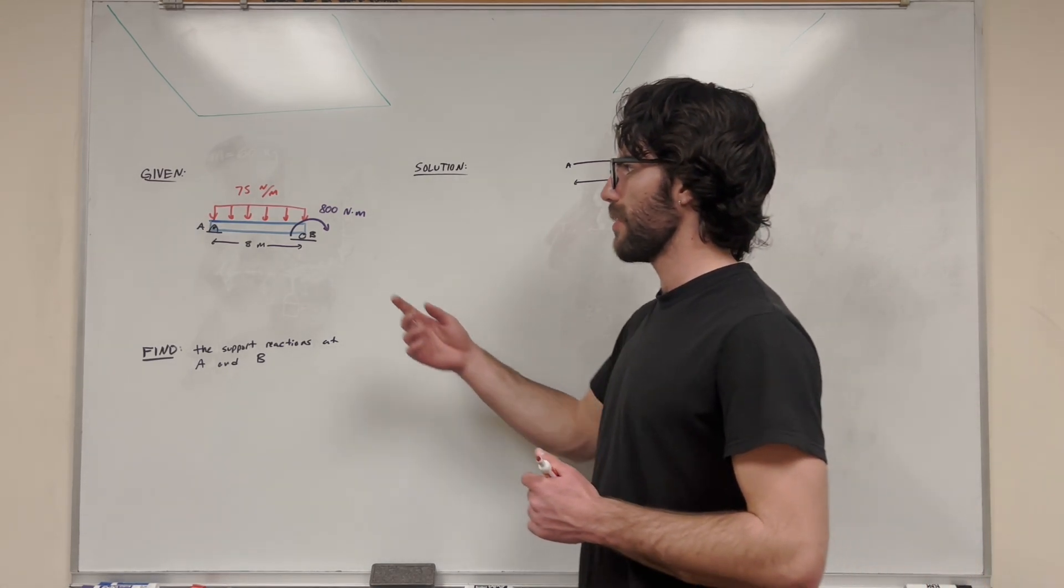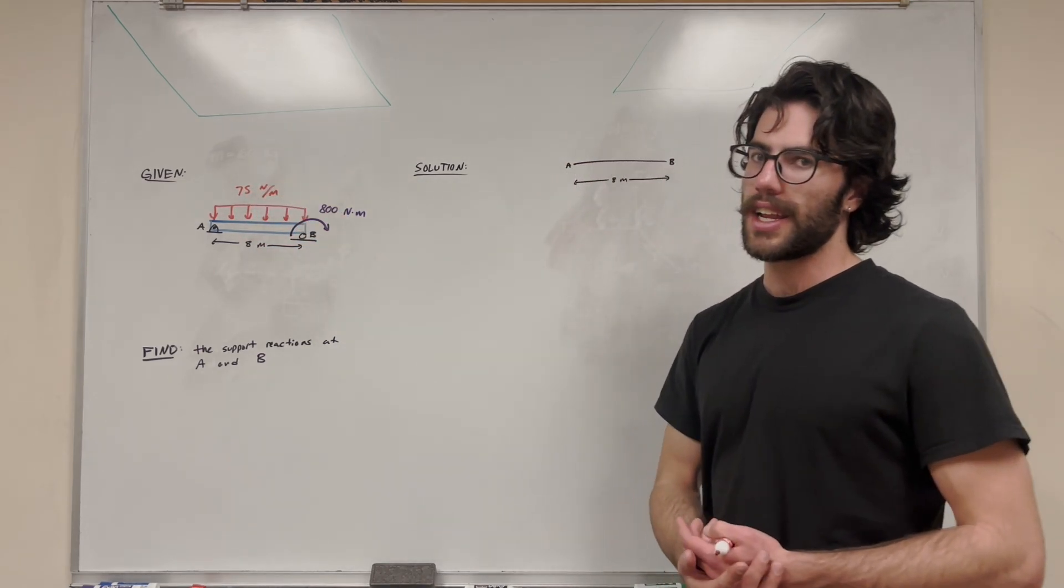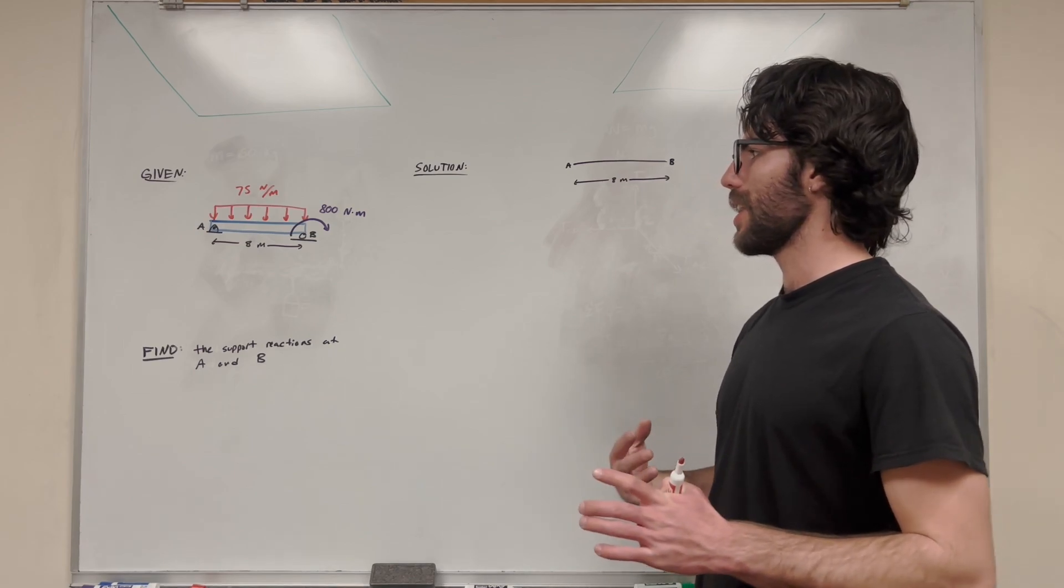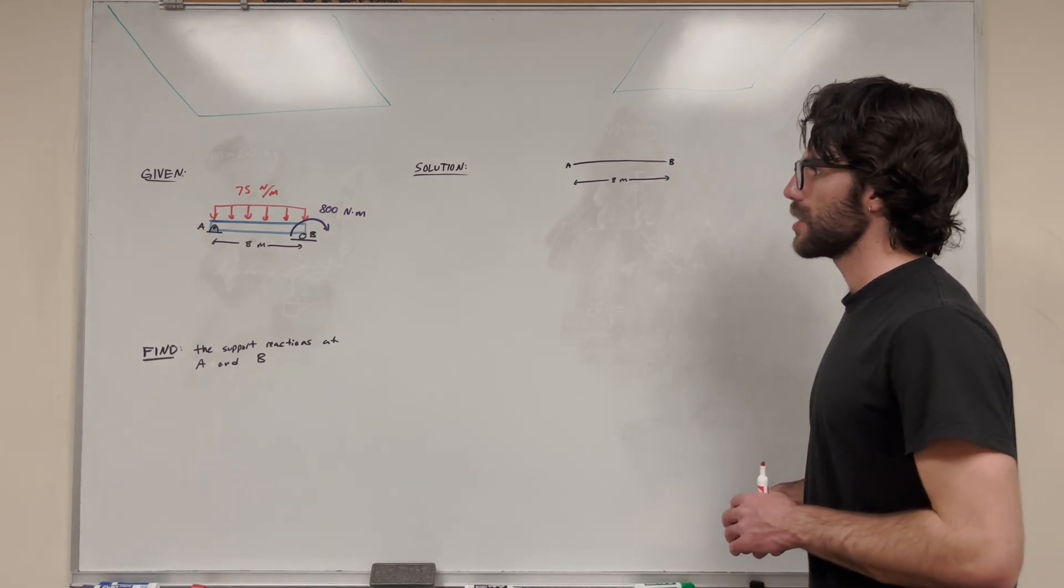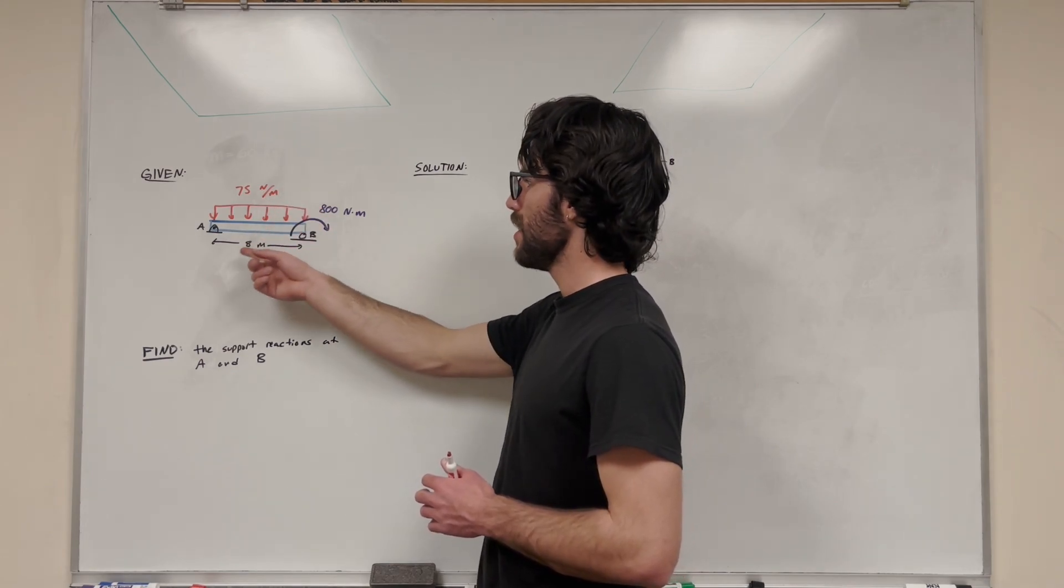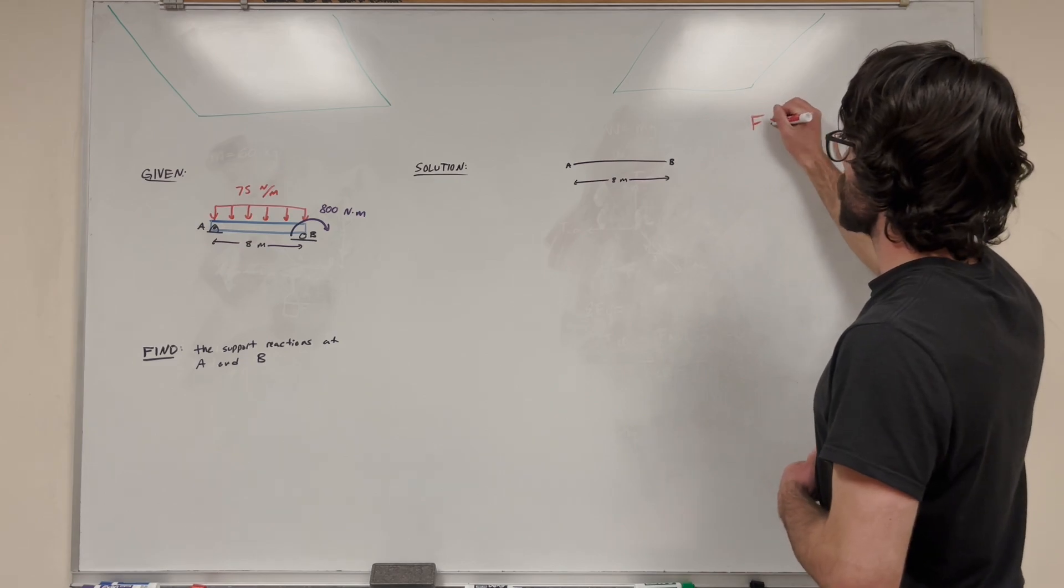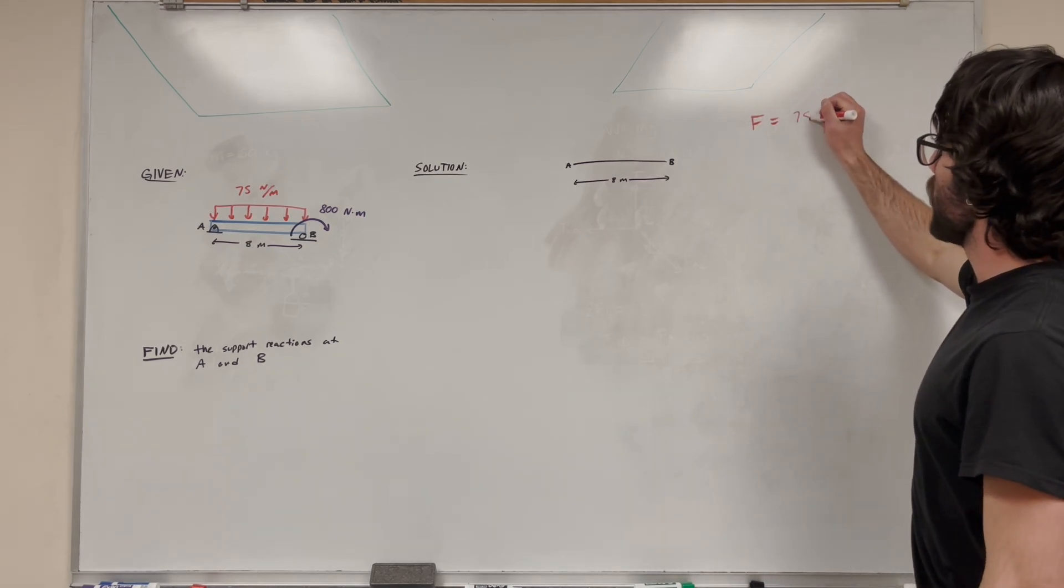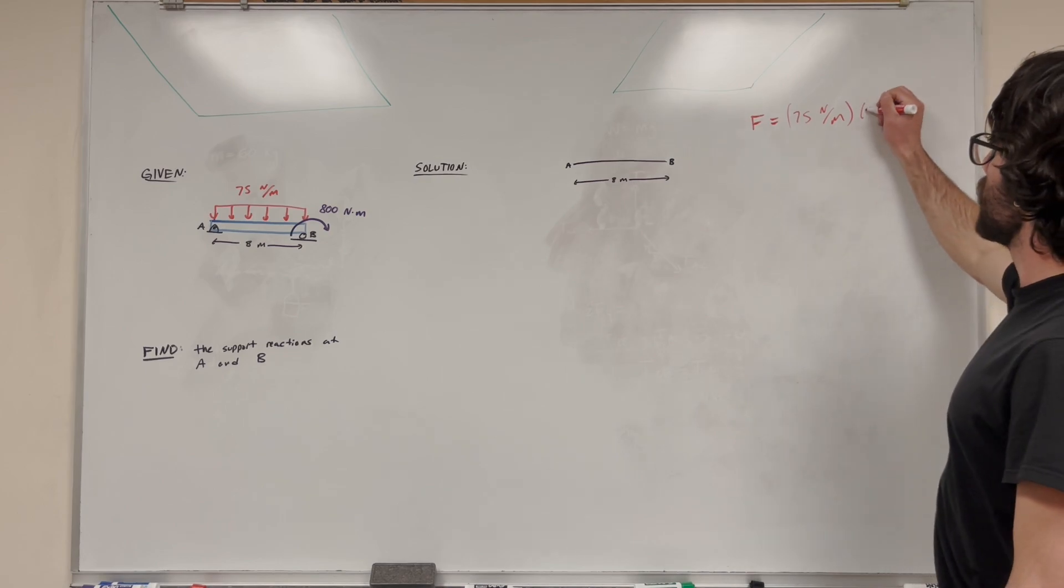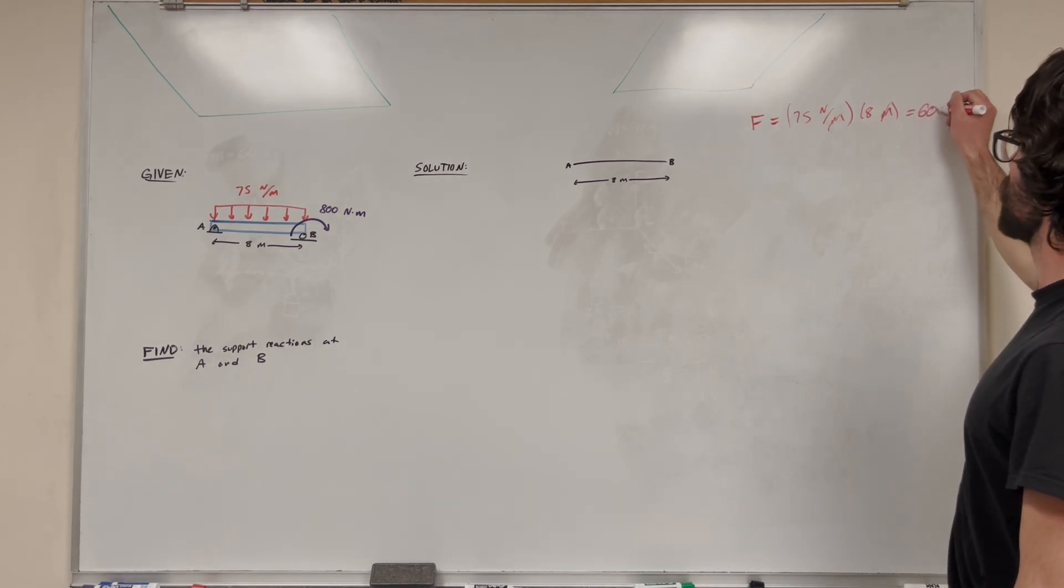So the first thing I like to do is we have this distributed load, 75 newtons per meter. We want to simplify that into one load basically. One simple thing. So we can think of that as a rectangle with a height of 75 newtons per meter and a base of 8 meters. So if we want to find the force, we can say that the force is equal to the 75 newtons per meter and then multiply it by its length of 8 meters. Then the meters are going to cancel and that's just going to give us 600 newtons.